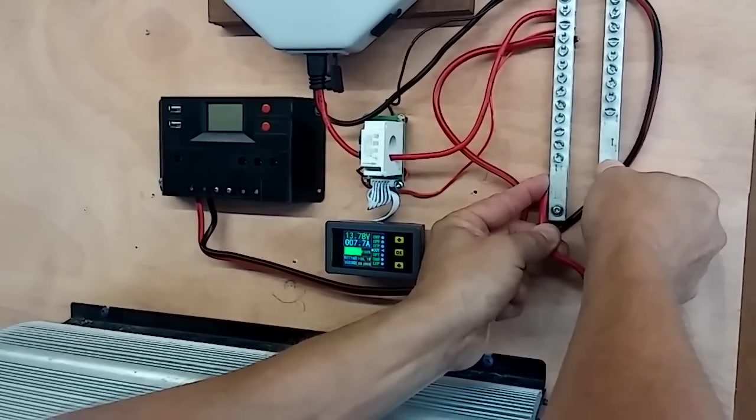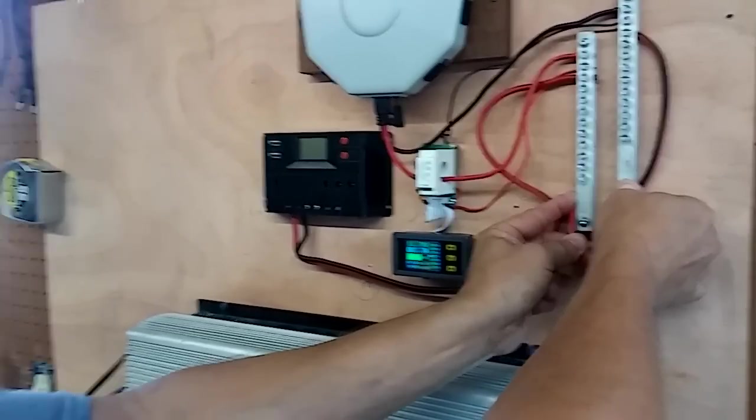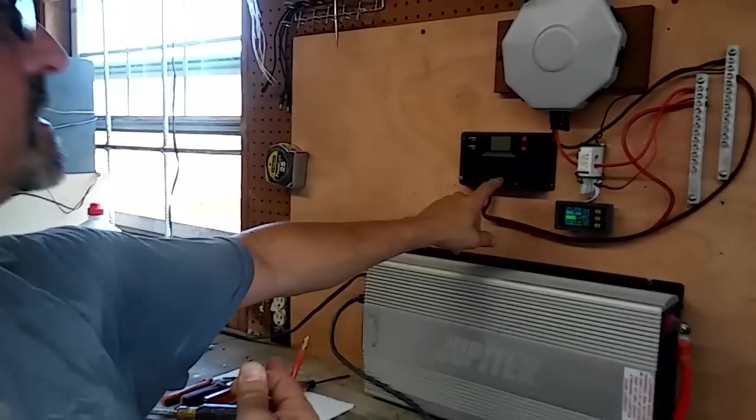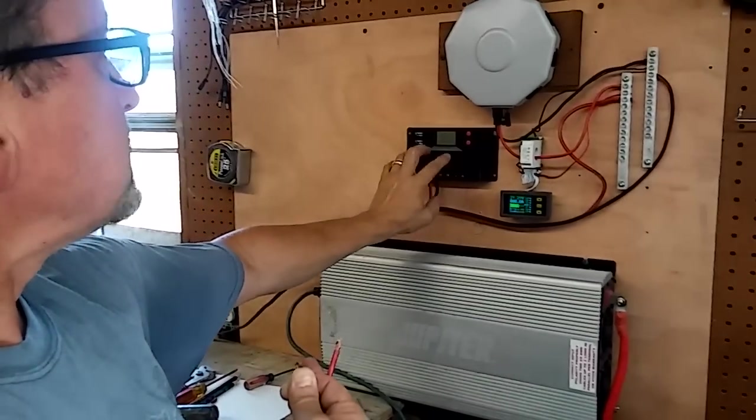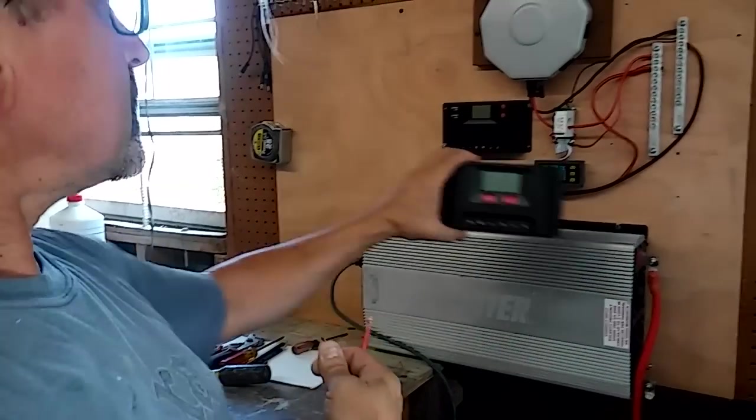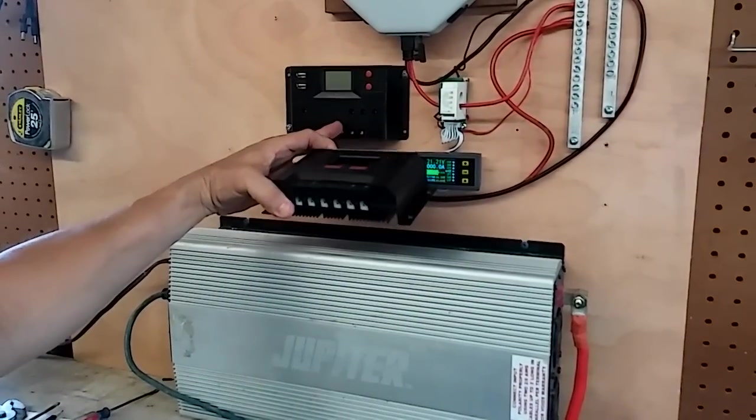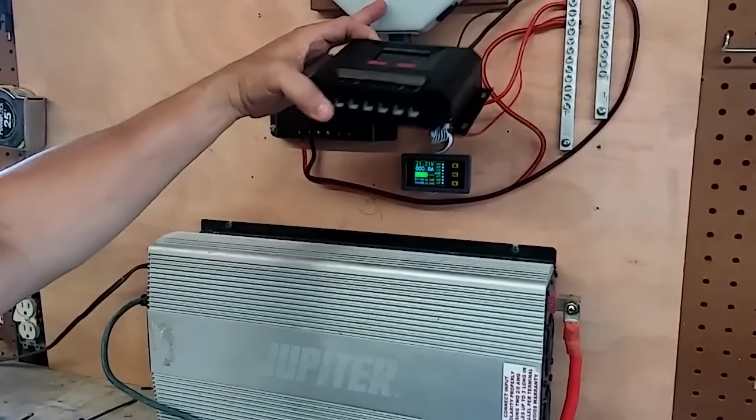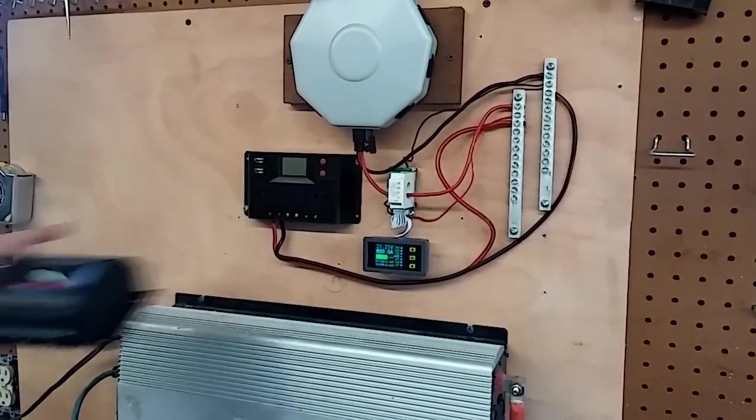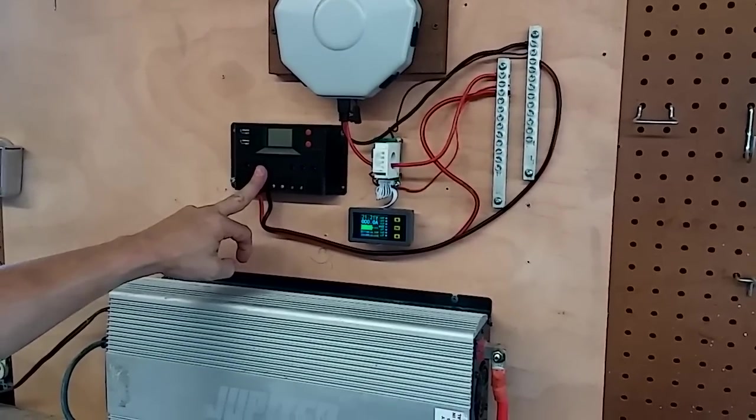So that's telling me this right here is giving me the exact max that I can get out of my solar panels. The 500 watt charge controller was not. It was only giving me five amps. This one is giving me the full output of this.